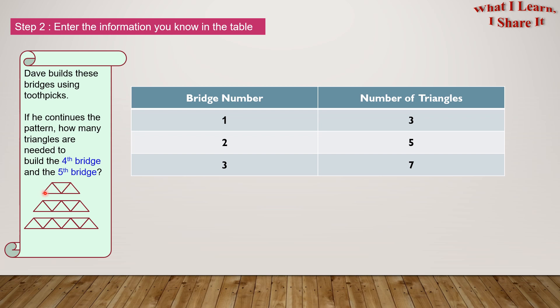1 triangle, 2 triangles, 3 triangles. 3 triangles for bridge number 1, 5 triangles for bridge number 2, and 7 triangles for bridge number 3.